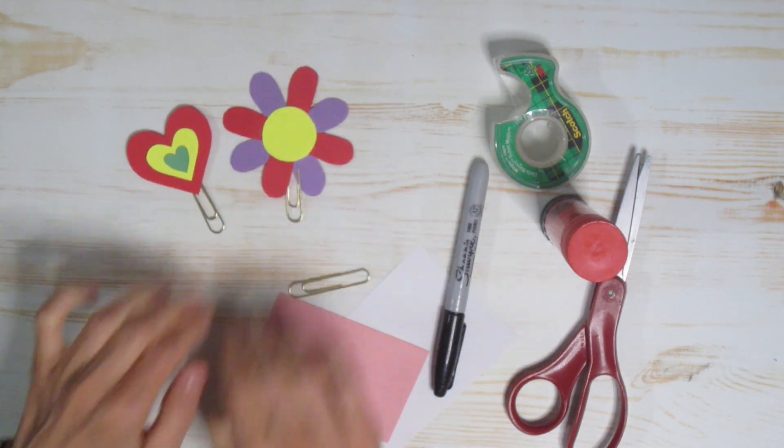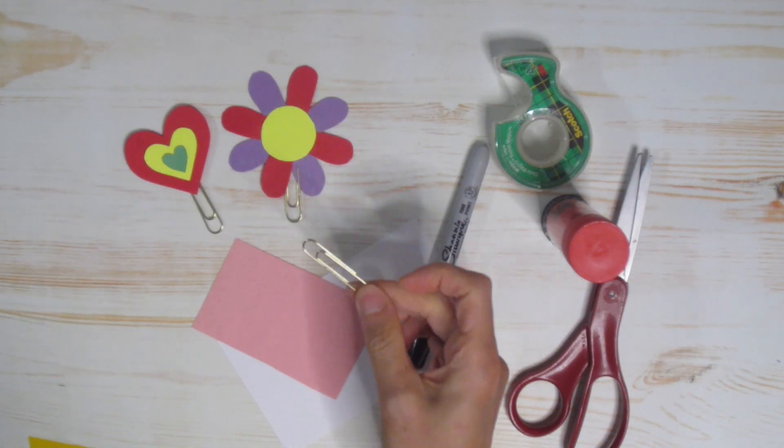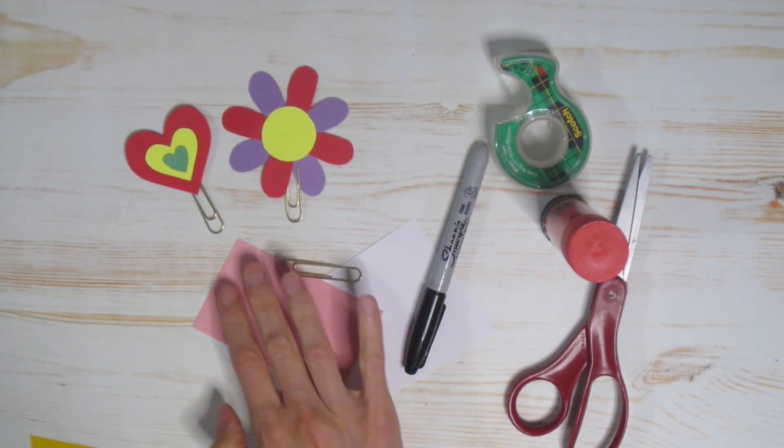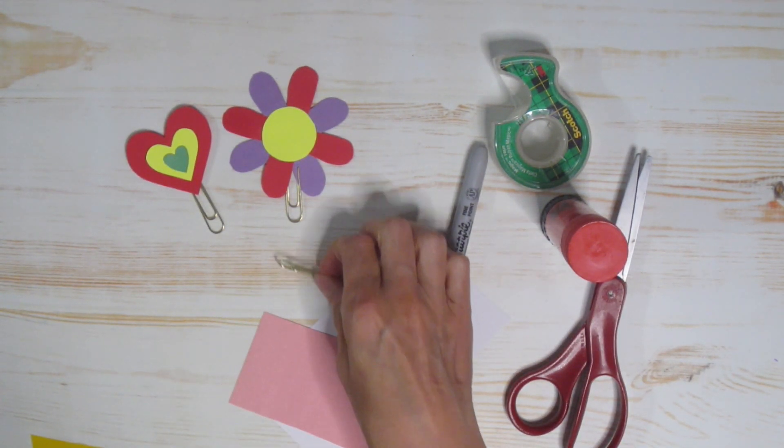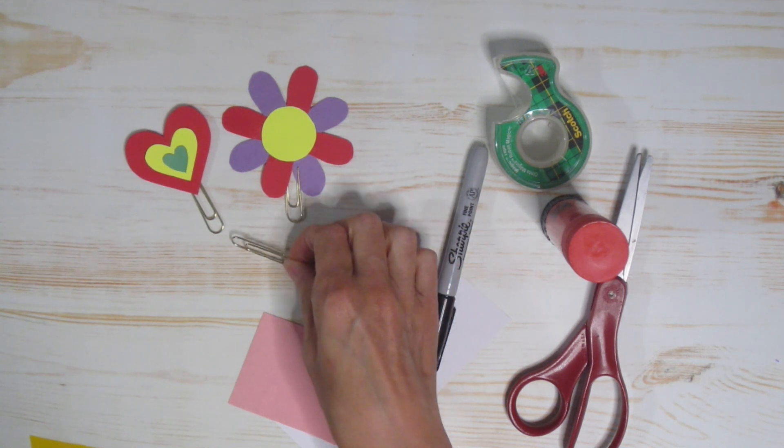And today I'm going to make a different one. This one's going to be like a little bunny. All you need is, for sure, a paperclip. Now I have these little gold ones, but they come in lots of different colors and sizes, so grab what you need. Even if you don't have a paperclip, you could use a popsicle stick. That would work as well.